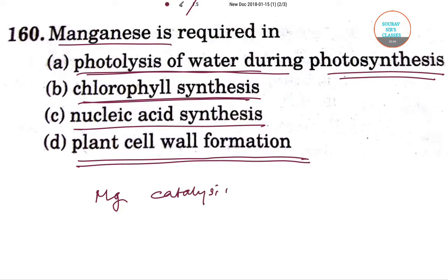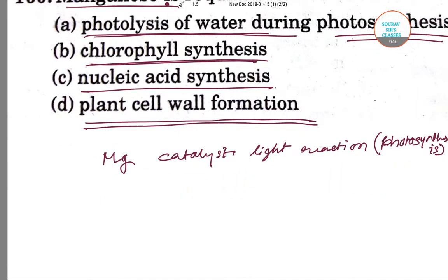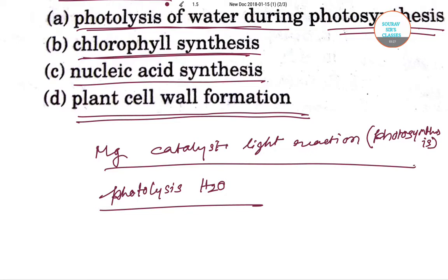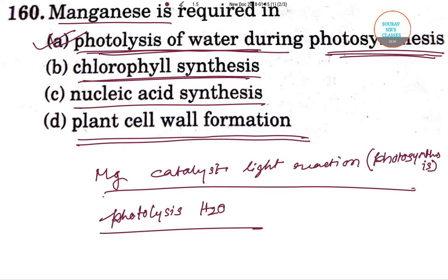Manganese acts as a catalyst in the light reaction, and the light reaction occurs in photosynthesis. It facilitates the photolysis of water in this photosynthetic reaction. So the answer will be option A, that is photolysis of water during photosynthesis.